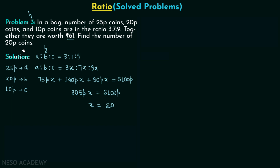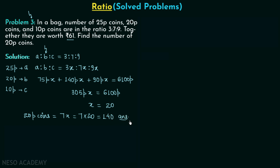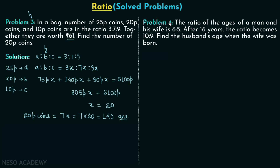As per the question we need to find the number of 20 paise coins, which is B. B equals 7X, so 7 × 20 = 140. Therefore the number of 20 paise coins is 140. This is our answer. Now we will move on to problem number 4.